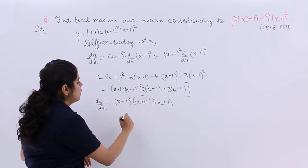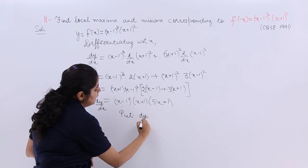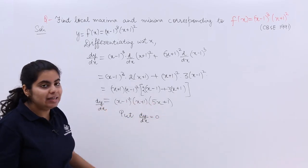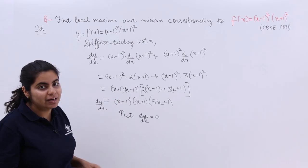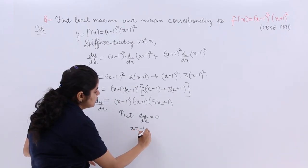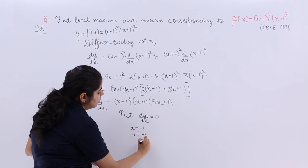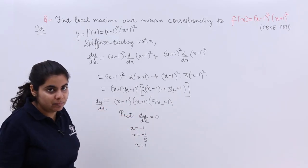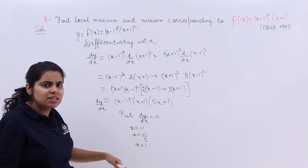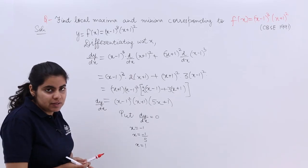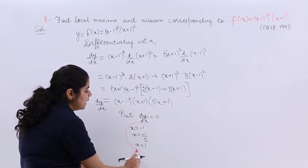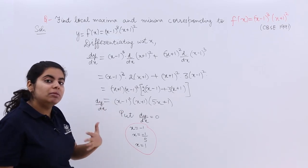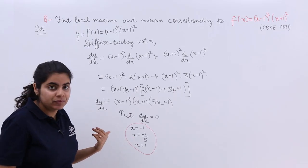The next step is to put dy/dx equal to 0. When you do that, you get different values of x. Setting each factor to zero: x = 1 from (x-1)², x = -1 from (x+1), and x = -1/5 from (5x+1). These critical points can be termed c1, c2, c3. My task is to determine which gives maxima, which gives minima, and which gives a point of inflection.